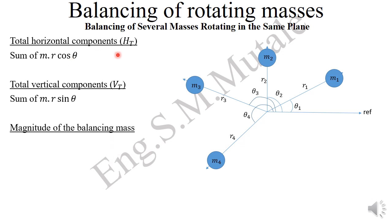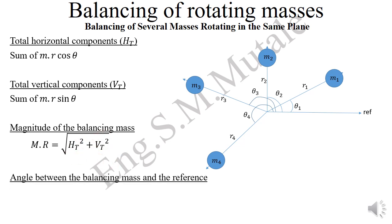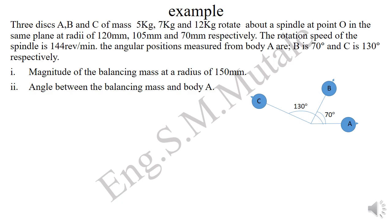Once you find the total horizontal and vertical components, you find the magnitude of the balancing mass. The product m·r for the balancing mass equals the square root of the total horizontal components squared plus the total vertical components squared. The angle between the balancing mass and the reference phasor is found by the arctangent of the total vertical components divided by the total horizontal components.